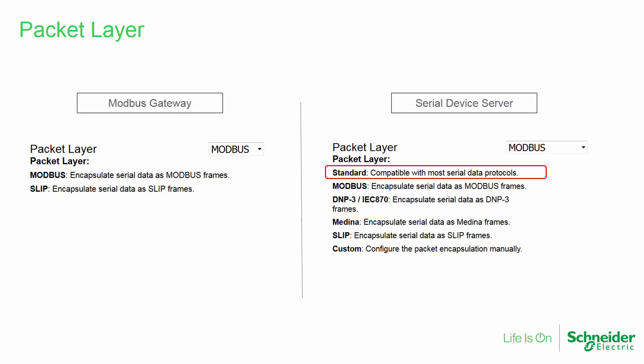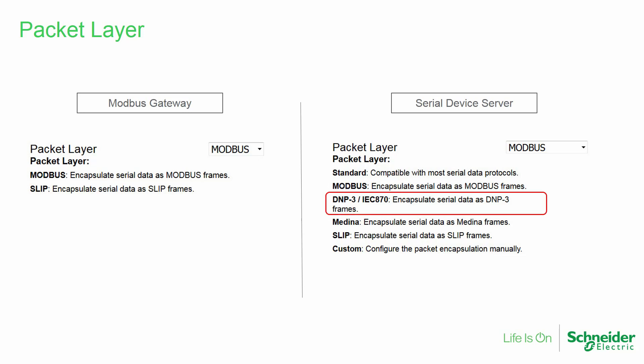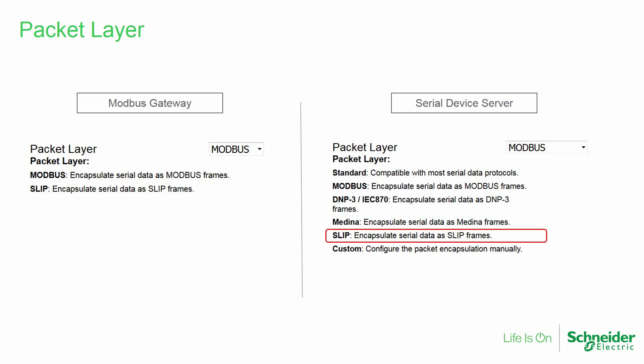When in serial device server mode, several more packet layer options are available. These include Standard, which is compatible with most serial data protocols; Modbus, providing port buffering to encapsulate an entire Modbus message and send it all at once; DNP3 and IEC-870 for port buffering and transport specifically of these two related protocols; Medina, for transport of this fairly rare protocol; SLIP as noted earlier; and also Custom. The selection of Custom Packet Layer allows handling of unusual protocols which may require special handling.